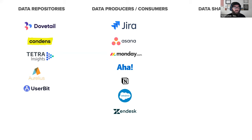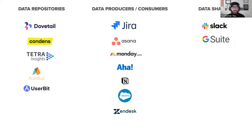The third part is data sharers — tools like Slack, G Suite such as email, Google Docs, and of course Microsoft Teams. This is also an important part: you can share information with people and people can share information with you through these tools.